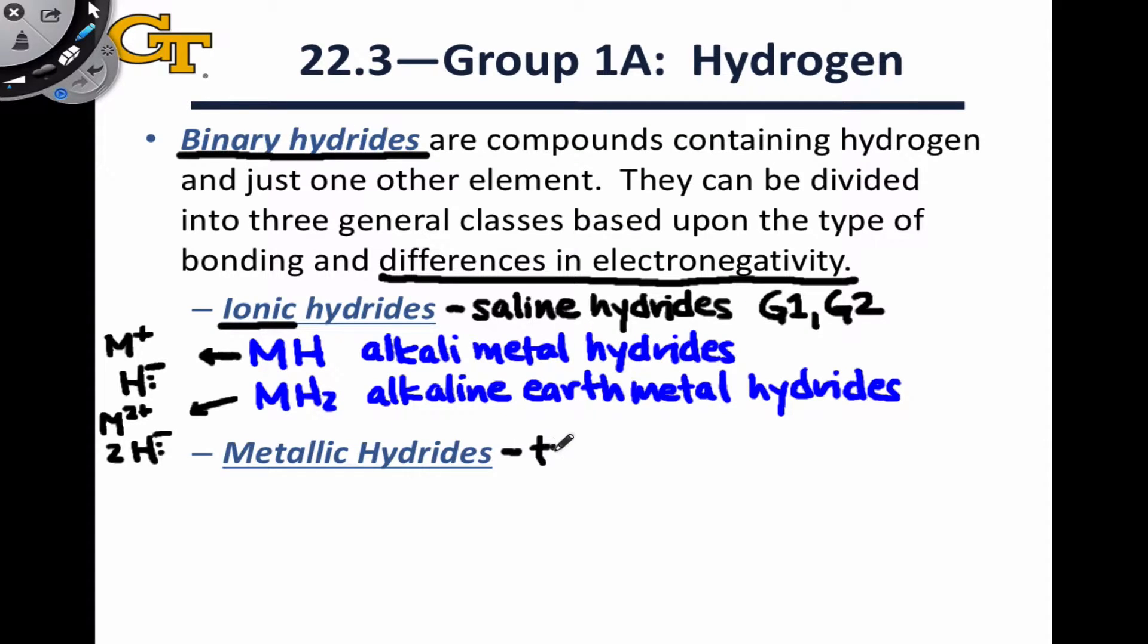Binary hydrides of the transition metals are characterized as metallic hydrides. Like the alkali metals, the transition metals are not super electronegative. However, they don't surrender electrons to hydrogen to form hydride in the same way that alkali metals and alkaline earth metals do. So the situation for the metallic hydrides is a little bit more complicated.